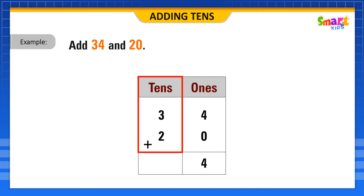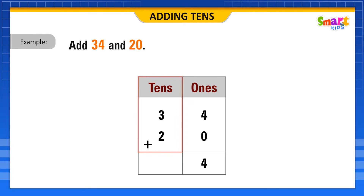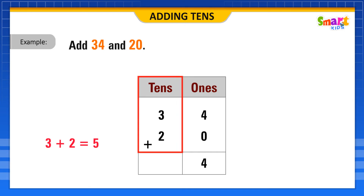Now, add the digits 3 and 2 in the 10s column. Thus, 3 plus 2 is equal to 5. Write 5 in the 10s place.